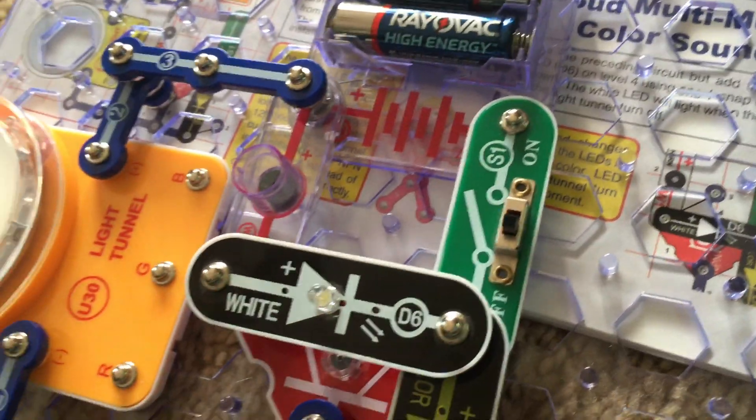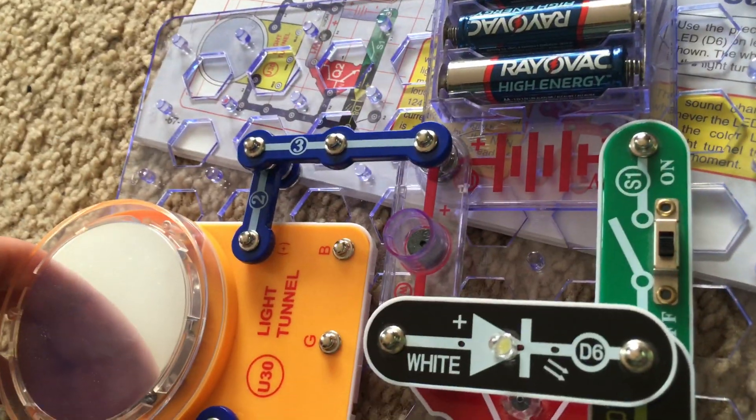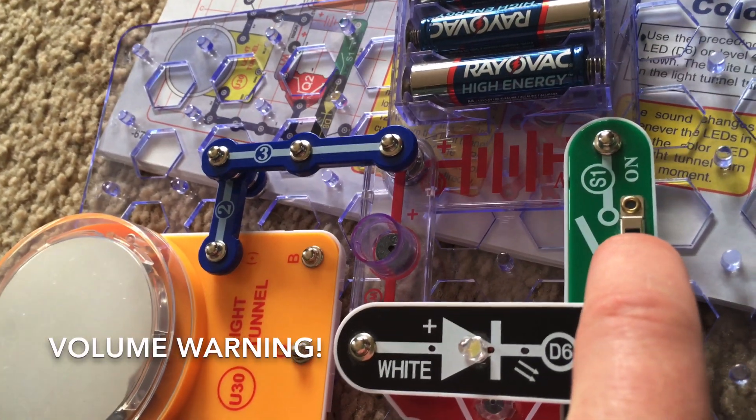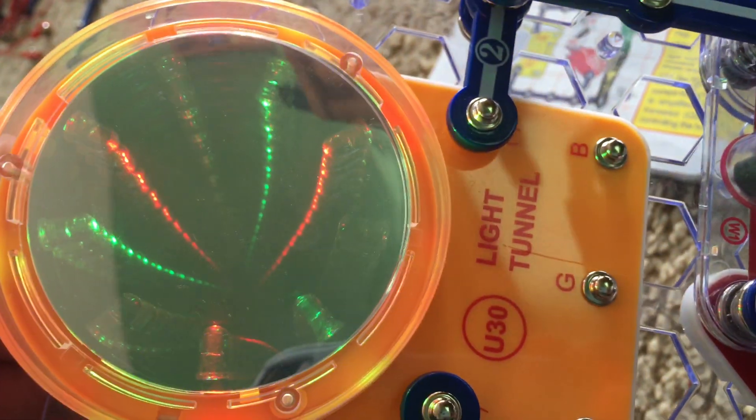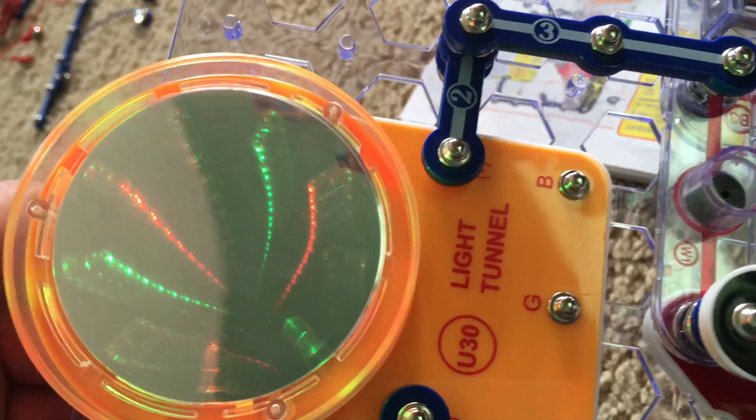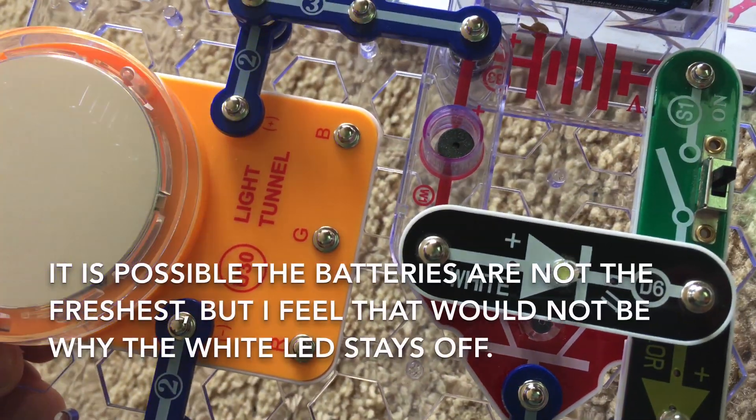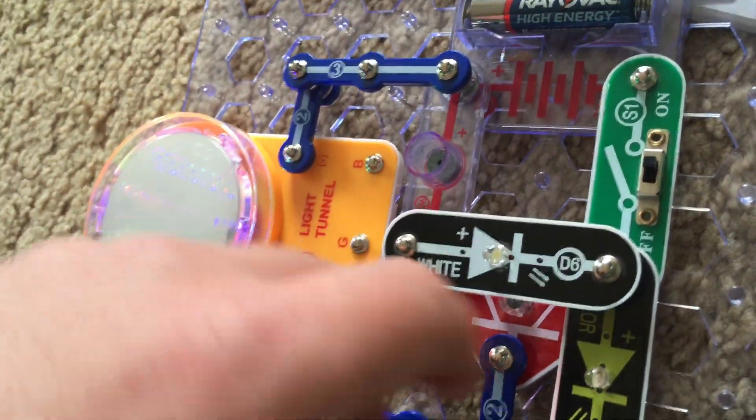It is supposed to come on whenever the LEDs on the light tunnel are off, but it does not. I'm just going to quickly turn it on, nothing happens even when the light tunnel LEDs are off so I'm not sure why that is, maybe there's not enough power.